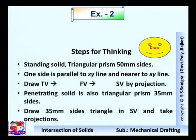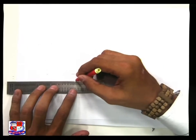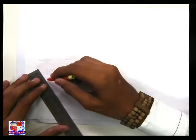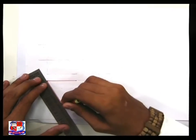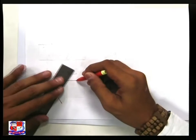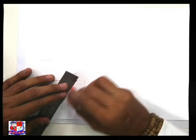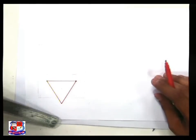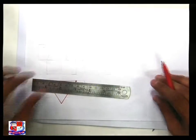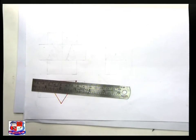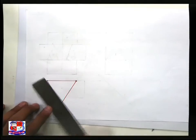First, it is given that a triangular prism has 50 mm sides below the XY line. Draw a triangle below the XY line in such a way that its base is parallel to the XY line and the side length is 50 mm.